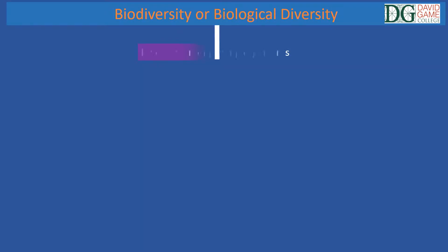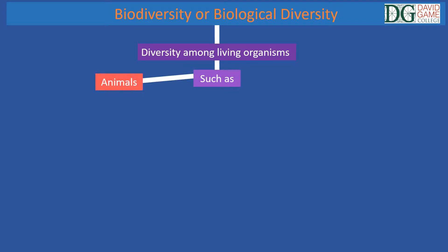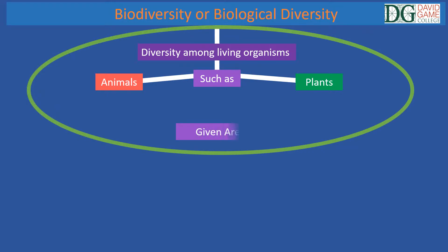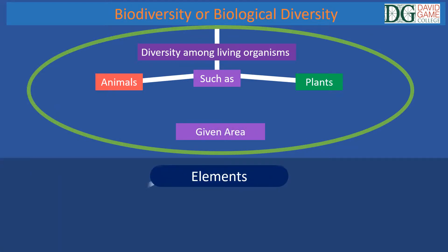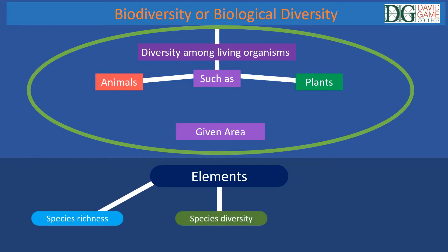This term describes the diversity among living organisms, such as animals and plants, that are present in a particular area. The concept has three major elements: species richness, species diversity, and genetic diversity.